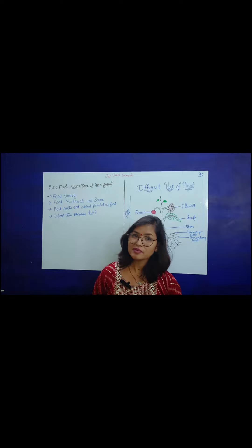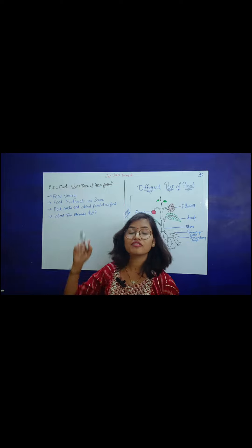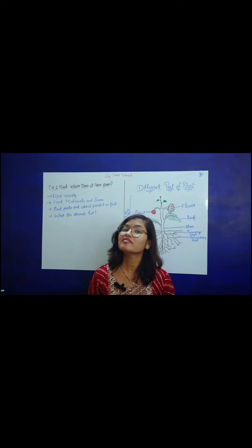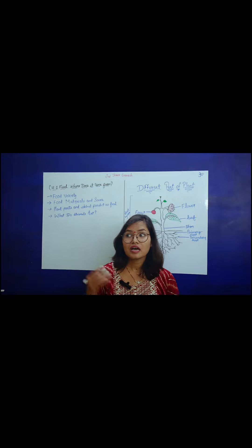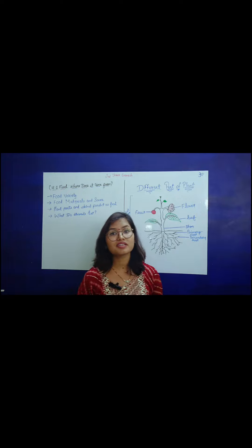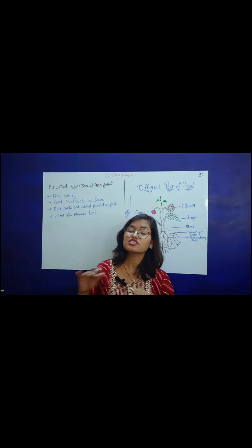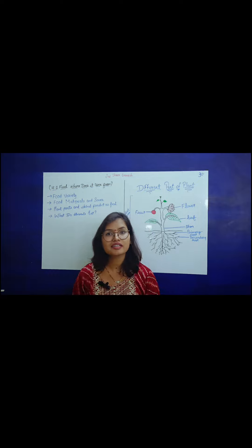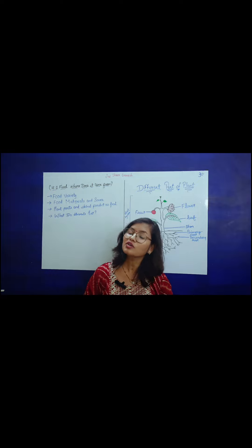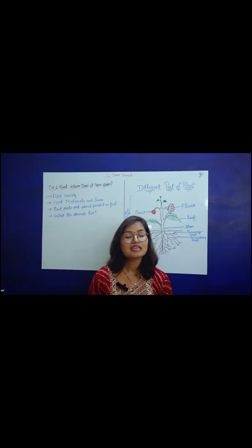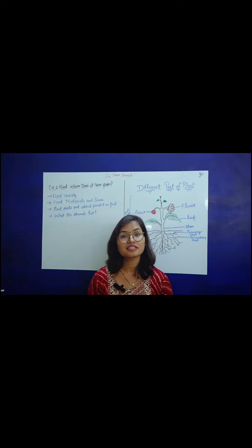In this chapter, the first topic is food variety. We know how many varieties of food exist in India. As we move to different cities and states, the food will change. If we go to Maharashtra, there is Puran Poli. If we go to Bihar, Bihar's famous dish is Liti Chokha.